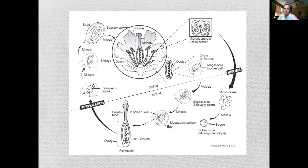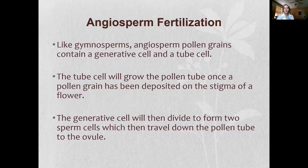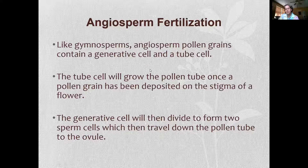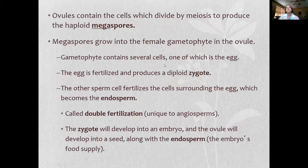Your pollen produces a pollen tube that carries the sperm down to the egg and fertilizes it, and your cycle begins anew. Like gymnosperms, angiosperm pollen grains contain a generative cell and a tube cell. The tube cell will grow the pollen tube. Once a pollen grain has been deposited on the stigma of a flower, the generative cell will then divide to form two sperm cells, which will travel down the pollen tube through the ovule, fertilizing it.